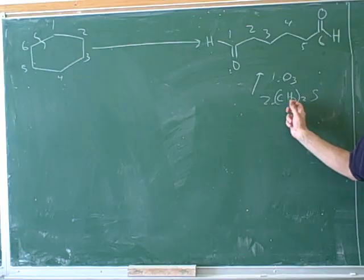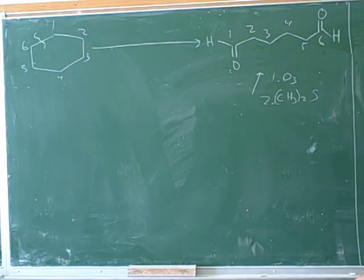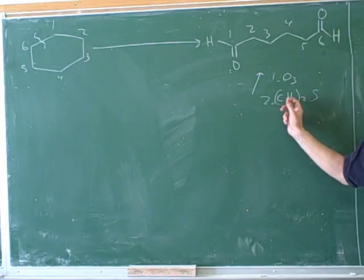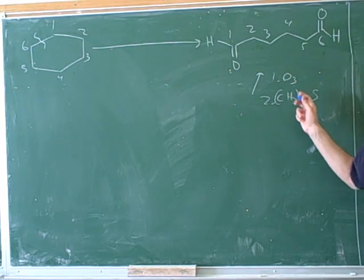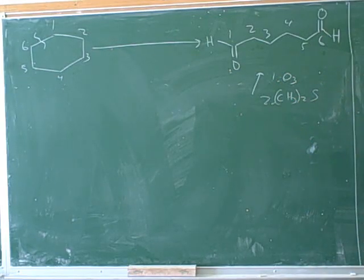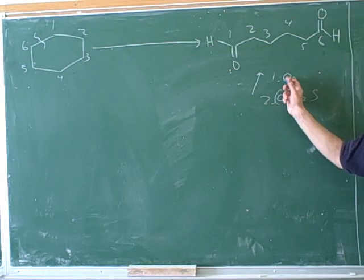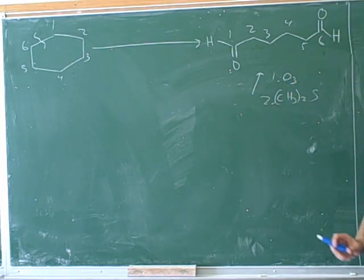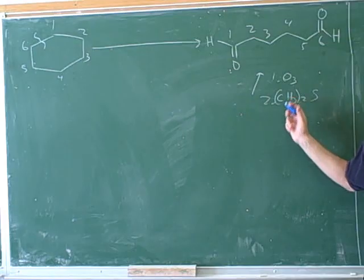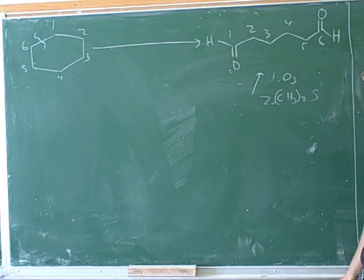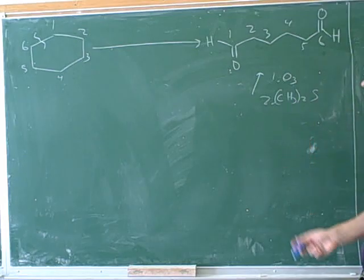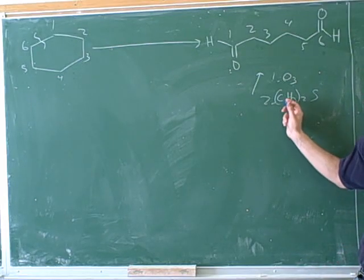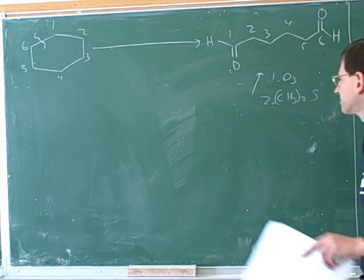We aren't quite sure what's happening here. We simply need to memorize that this is a necessary second step for ozonolysis. This is not a mechanism that's too important to worry about. You do need to memorize that after the oxidation in step one using the ozone, there has to be a reduction step, and this is the reduction that's usually used. Sometimes we also use zinc and acetic acid, but this may be more common. We'll just memorize this is the second step of an ozonolysis without worrying about the mechanism.